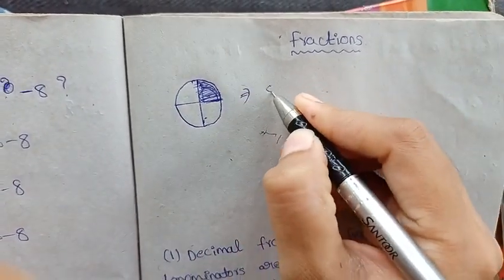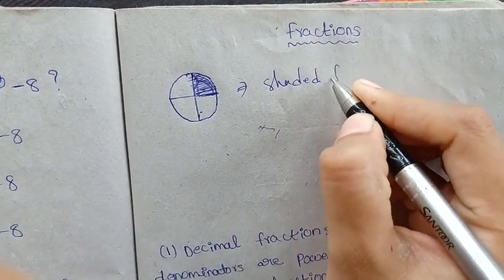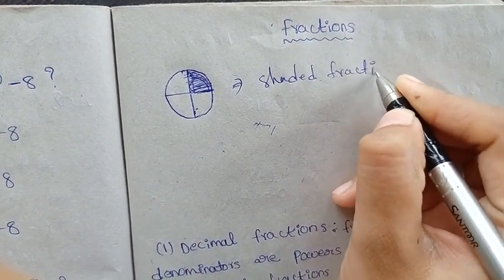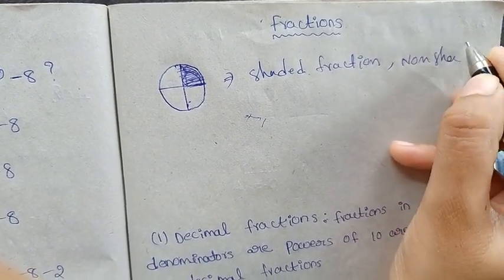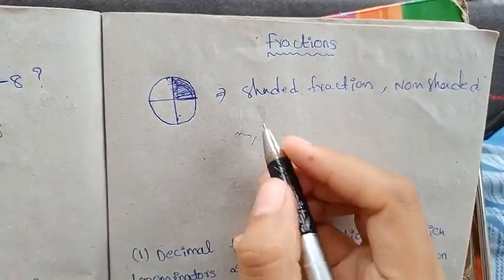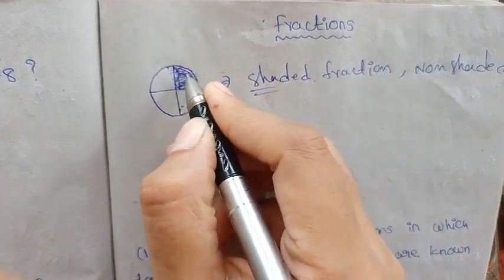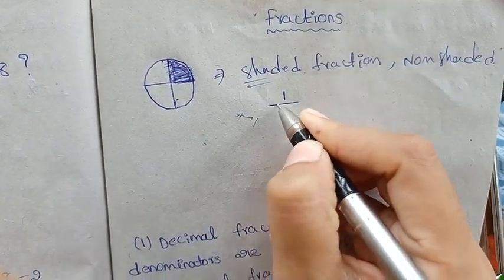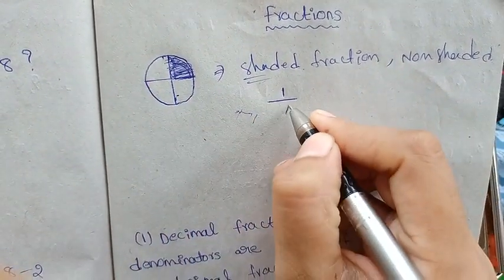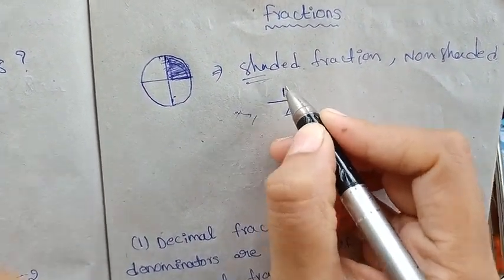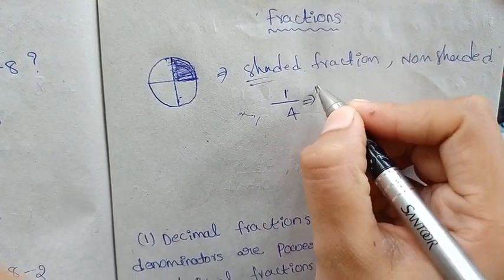Now I am going to make a circle. Shared fraction — what is the question? Shared fraction and non-shared fraction. Shared fraction: 1 divided by 1, 2, 3, 4.